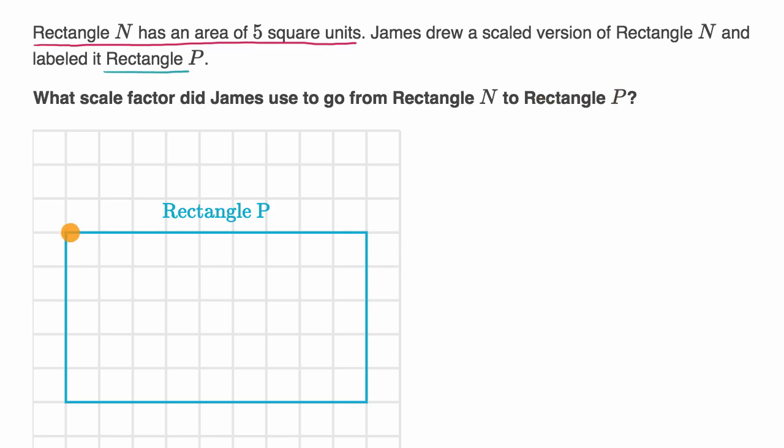So let's think about it. They give us rectangle P right over here. And let's think about its dimensions. This height is one, two, three, four, five. It's five high and it is nine wide. And so its area, its area is equal to 45.